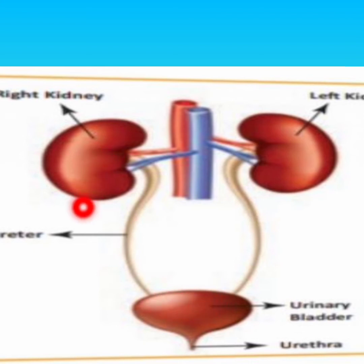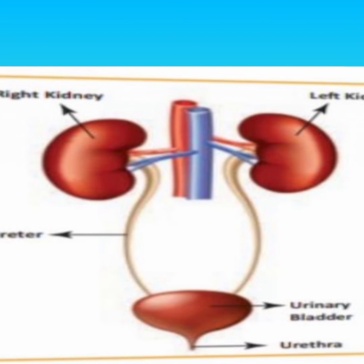The kidney filters the blood to remove waste and produce urine. The kidneys are a pair of dark red, bean-shaped structures. The right kidney is lower than the left kidney. Each kidney is 12 cm long, 6 cm wide, and 3 cm thick. Each kidney is covered by a fibrous membrane called the capsule.